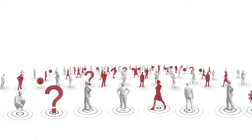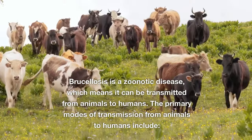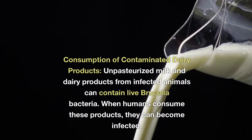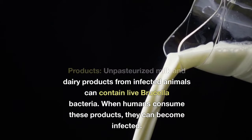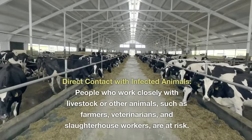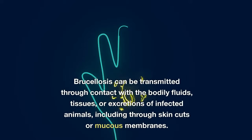How brucellosis transmits to humans. Brucellosis is a zoonotic disease, which means it can be transmitted from animals to humans. The primary modes of transmission include consumption of contaminated dairy products — unpasteurized milk and dairy products from infected animals can contain live Brucella bacteria. People who work closely with livestock, such as farmers, veterinarians, and slaughterhouse workers, are at risk. Brucellosis can be transmitted through contact with bodily fluids, tissues, or excretions of infected animals, including through skin cuts or mucous membranes.